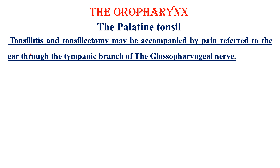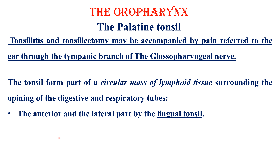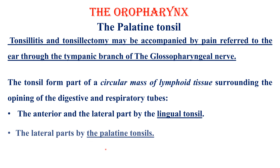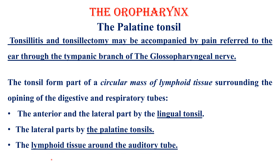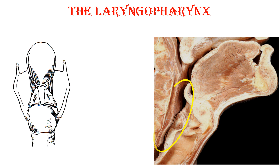Still on the palatine tonsil: tonsillitis and tonsillectomies are accompanied by pain referred to the ear through the tympanic branch of the glossopharyngeal nerve, which is very close to the bed of the tonsil. The tonsil forms part of a circular mass of lymphoid tissue surrounding the openings of the digestive and respiratory tubes — Waldeyer's ring — formed anteriorly and laterally by the lingual tonsil, laterally by the palatine tonsil, with lymphoid tissue around the auditory tube, and behind and above by the pharyngeal tonsil.